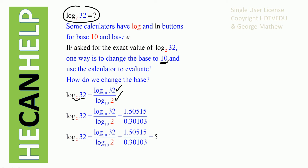What is log 32 to the base 10? Once you punch log 32 in your calculator, you will see it is 1.50515. When you punch in log 2 to the base 10 in your calculator, you get 0.30103. So log 32 to the base 2 is equal to 1.50515 divided by 0.30103, and that is equal to 5.